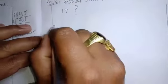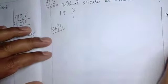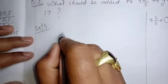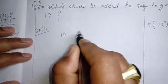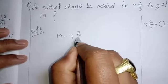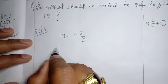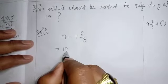So for finding out that one number, we will subtract this number from 19. 19 minus 9, 2 by 3.